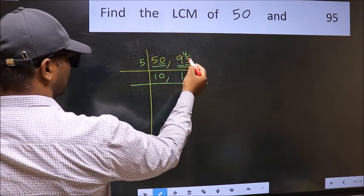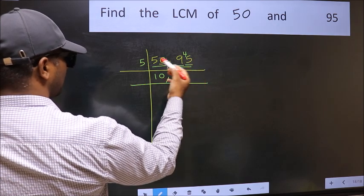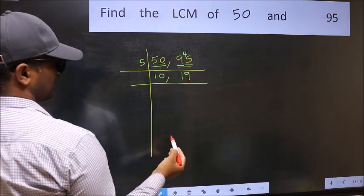9 minus 5 is 4. 4 carried forward is 45. When do we get 45 in the 5 table? 5 nines 45.